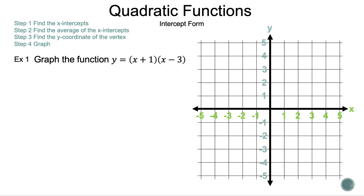Example one: graph the function y = (x + 1)(x − 3). Let's rewrite the function with hidden numbers so we can see more easily what is happening: y = 1 · (x + 1)(x − 3). Our first step is to find the x-intercepts — also called the zeros.